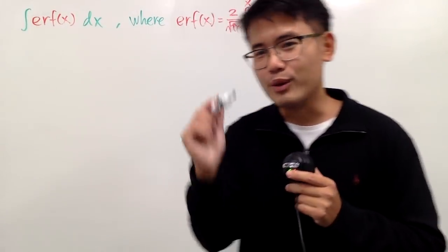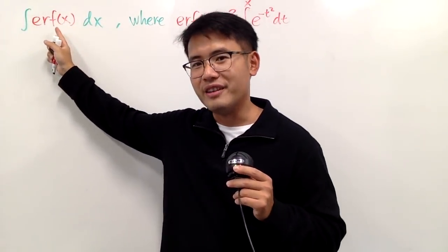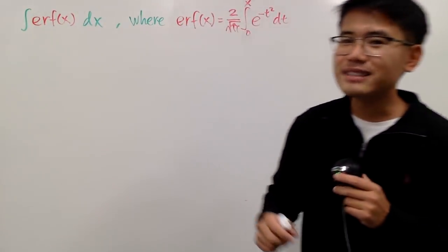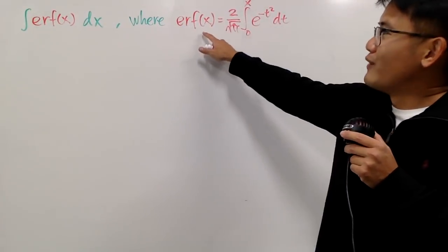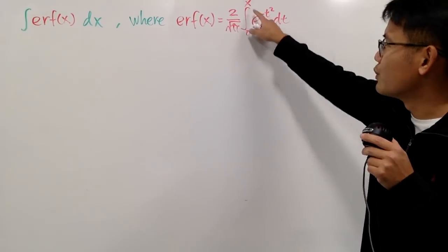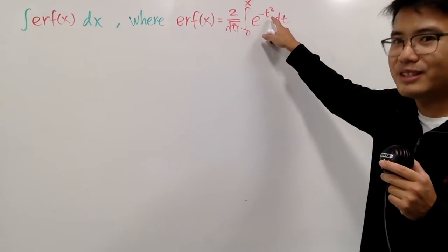Okay, Christmas colors continue. Here we're going to integrate the error function erf of x. And last time we saw that the erf of x is just 2 over square root of pi times the integral from 0 to x of e to the negative t squared dt.